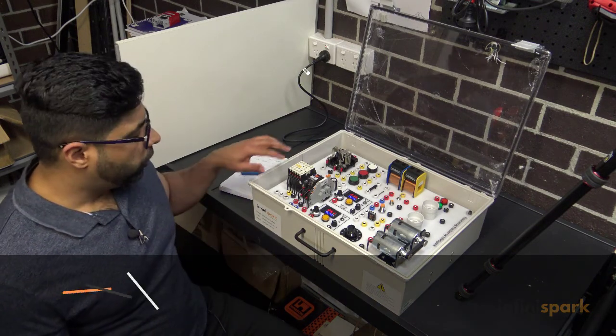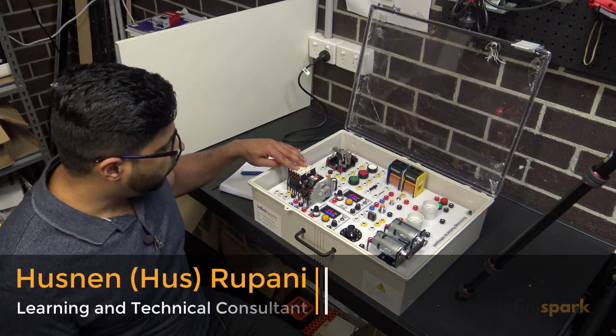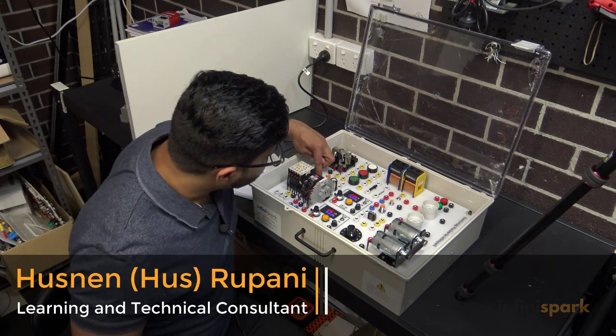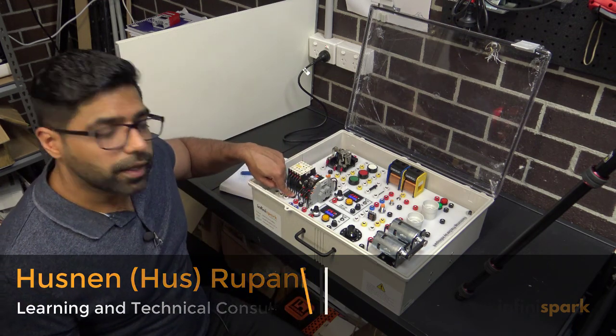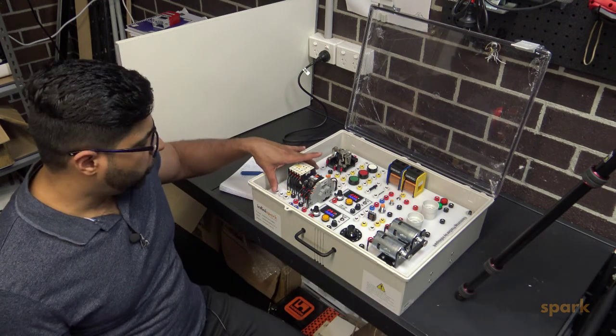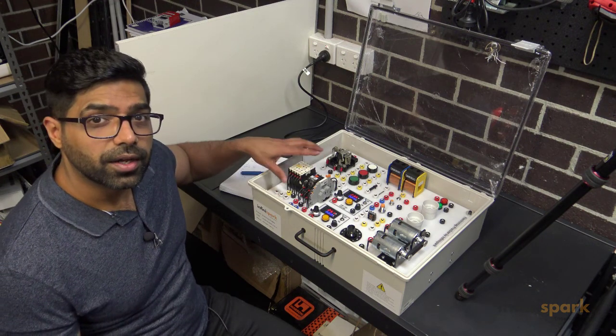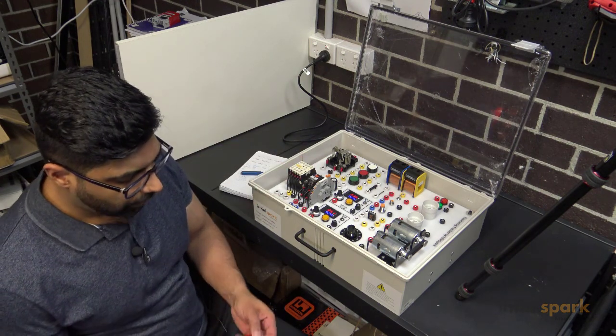Let's now wire the 24-volt contactor. This is a 24-volt DC contactor. Positive is red and negative is black for the coil, and all other connections are the contact terminals.